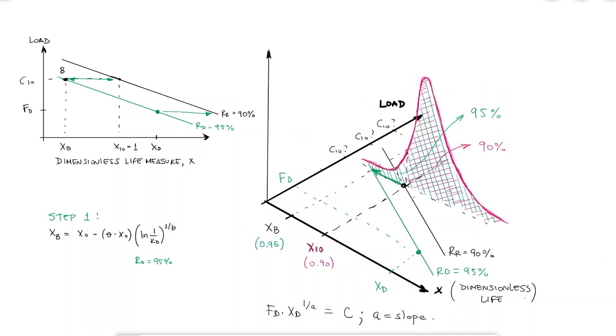And this is how I find C10, the catalog load rating. In summary, to get from my desired operation point, capital D, to the C10 value I'm trying to find to choose a bearing from a catalog list, and we'll call this capital A, I would need to go from D to B, which is directly to the left of A.